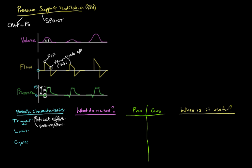In the middle of the breath, the limit variable — the summit that's limited within the breath but doesn't cause the breath to end — is pressure. We elevate the pressure up to a certain point and hold it there until the breath ends, so the limit variable is pressure. The cycle variable — what causes the breath to end — is flow. Once the flow decays down to a certain percentage of peak flow, the breath ends, so the cycle variable is flow.